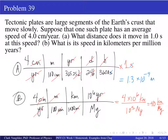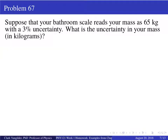Suppose your bathroom scale reads your mass as 65 kilograms with a 3% uncertainty. Now we talk about uncertainty. The textbook notation uses a delta symbol that looks like a partial derivative — it's really just a formula. The percent uncertainty is placed over the full measure. So you take 3/100 times 65 kilograms, which gives about 2 kilograms of uncertainty. That's a lot — about 4 pounds — a pretty crummy scale.